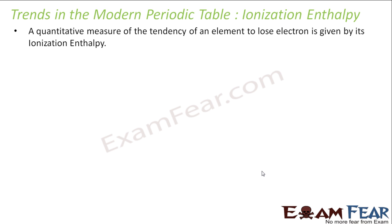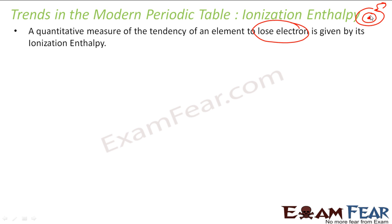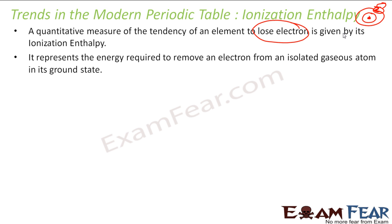Now let us discuss ionization enthalpy. Ionization means tendency to lose electrons. When you ionize a particular atom, one electron is kicked out. It is a quantity measured to find the tendency of the element to lose electrons. It is actually energy — the energy required to remove one electron from an isolated gaseous atom in the ground state.